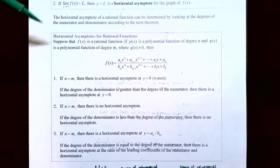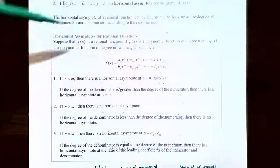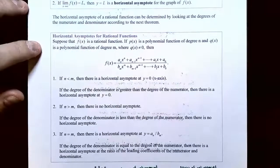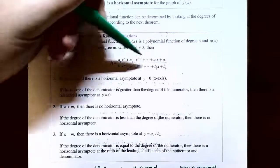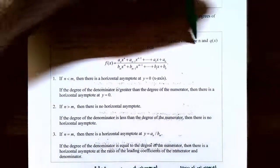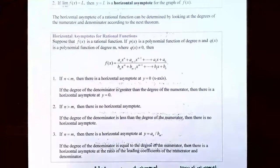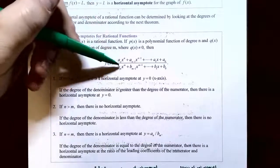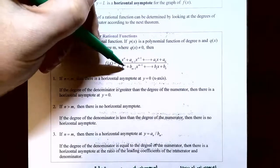There is a quick way to find horizontal asymptotes for rational functions. Suppose f(x) is a rational function where the numerator is a polynomial of degree n — with leading coefficient a sub n — and the denominator is a polynomial of degree m — with leading coefficient b sub m. The numerator has powers of x down from x to the n, and the denominator has powers down from x to the m.